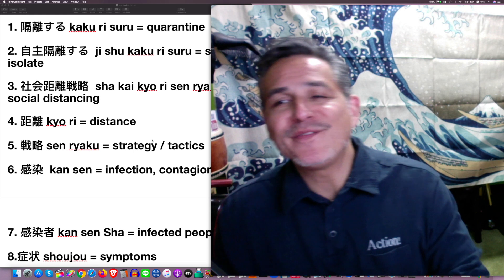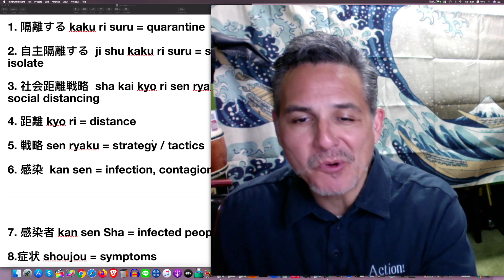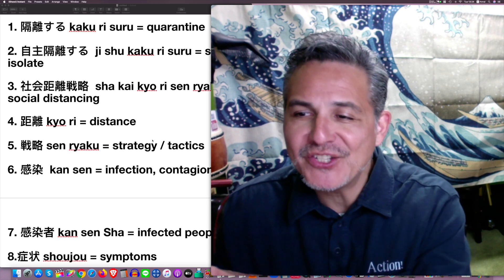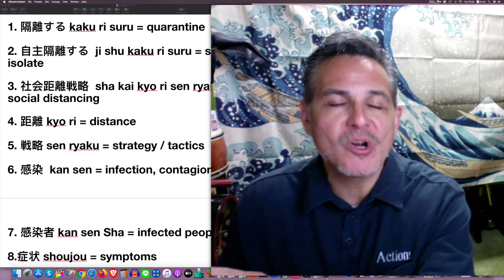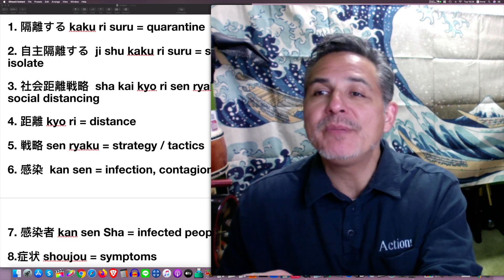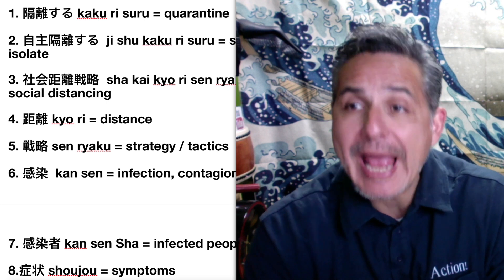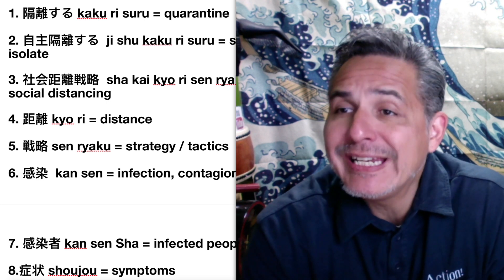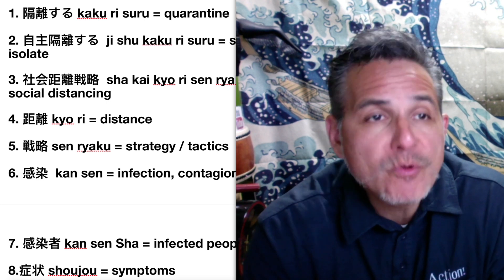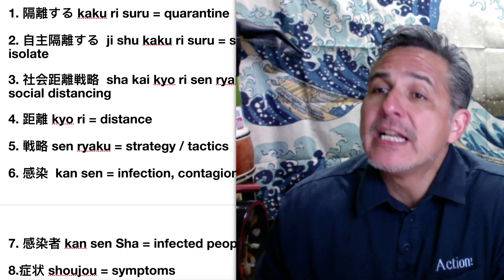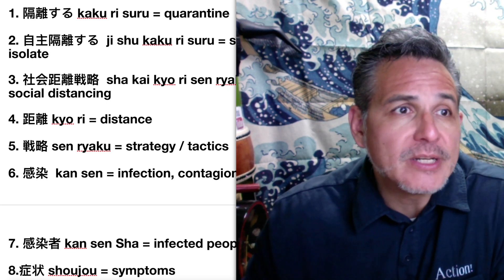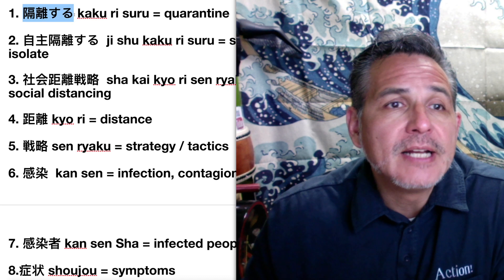Hello there morons, it's Victor, King of the Morons, and this is Japanese for Morons. I thought it would be a good idea to teach you some vocabulary related to the coronavirus, so let's get to it.